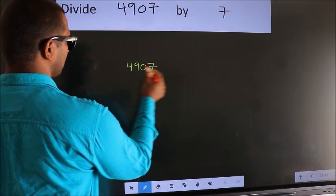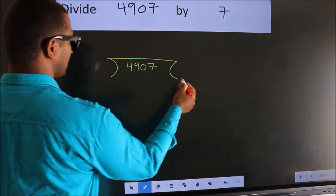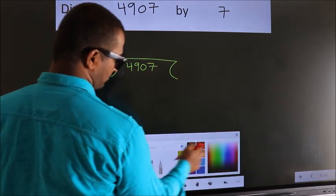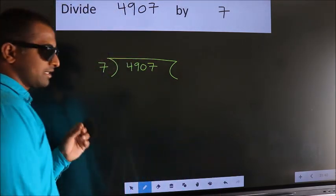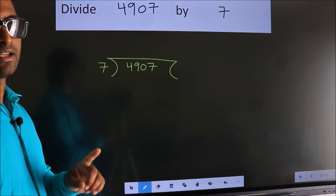4907 here, 7 here. This is your step 1. Next.